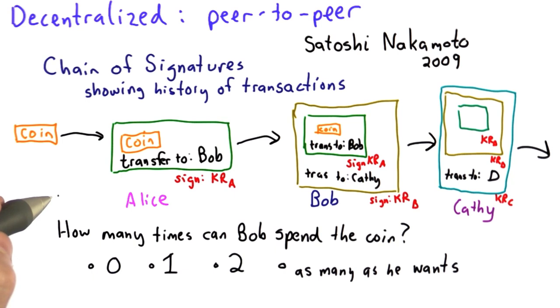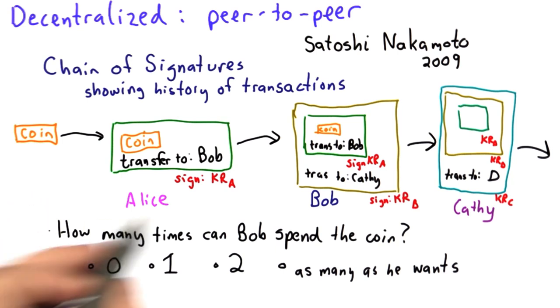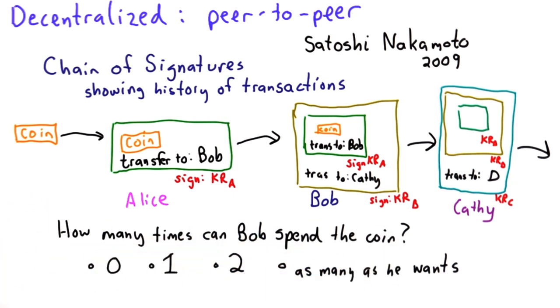Does this provide enough to provide digital cash? How many times can Bob spend the coin?